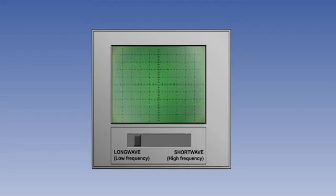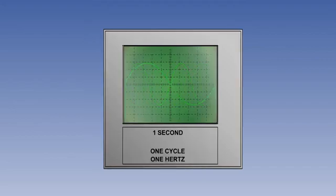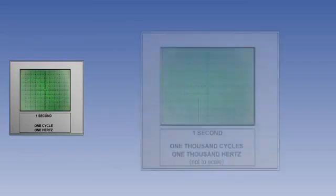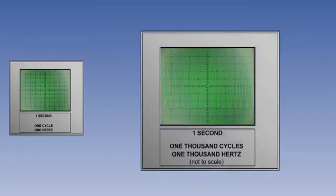Move the slider to see how wavelength and frequency are inversely proportional to each other. So if one cycle of a radio wave takes one second to be completed, the wave will have a period of one second and a frequency of one hertz. If there are a thousand cycles per second, the wave will have a period of one one-thousandth of a second and a frequency of a thousand hertz.